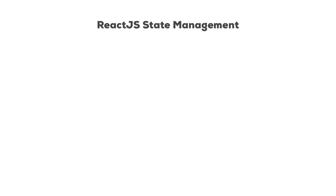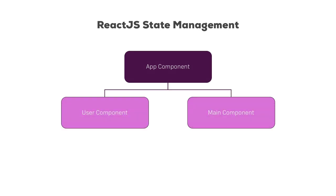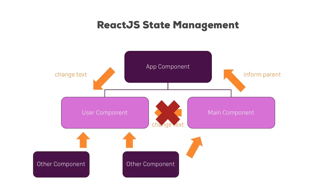The core problem with React.js state management is that we get an app component and subcomponents, and if I want to change a text, I can't do this directly. Instead, I have to inform the parent, change the text there, and if I got additional components, then it gets even more complex.